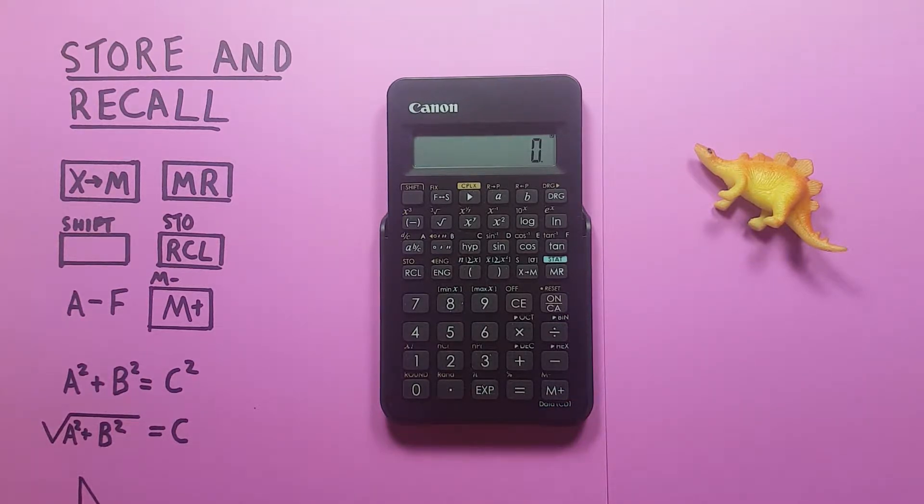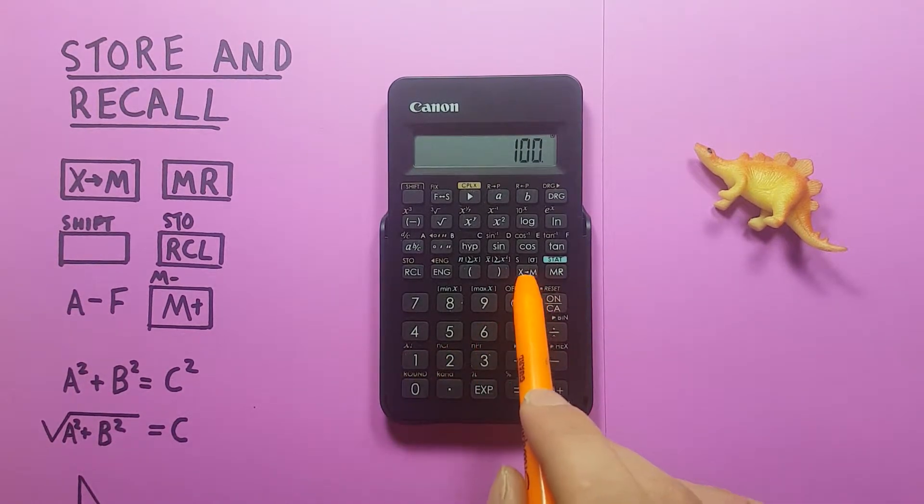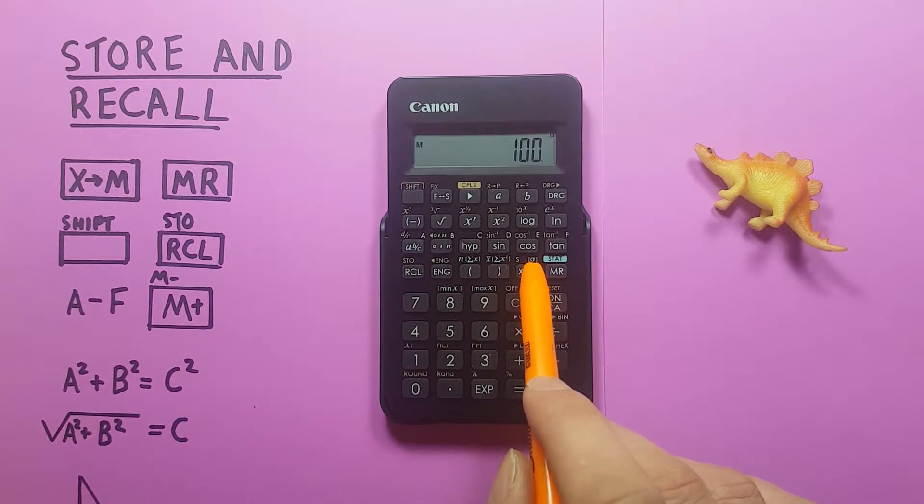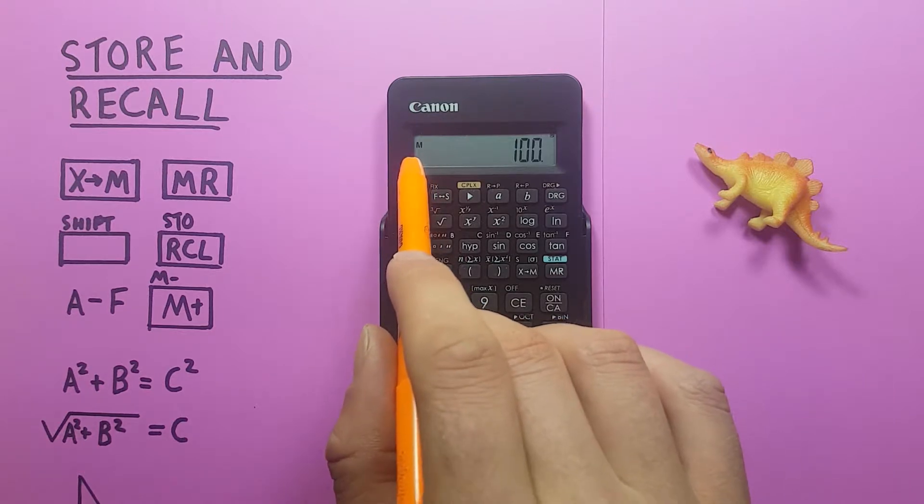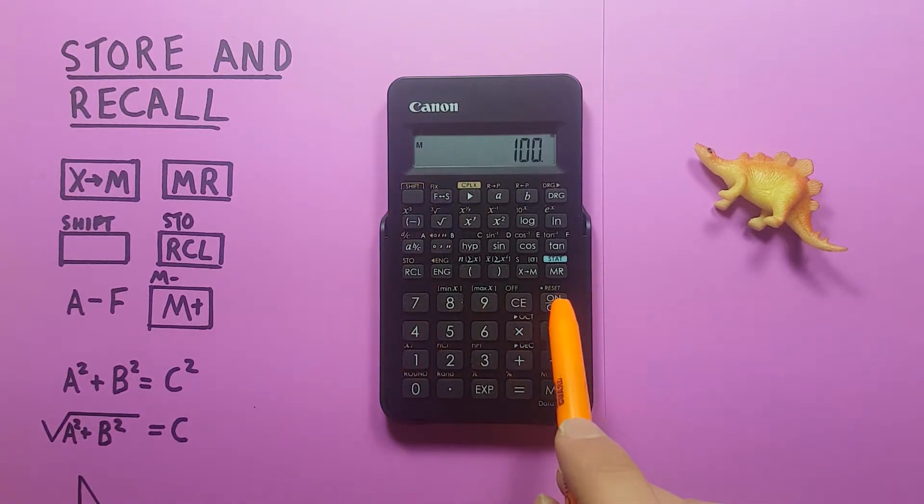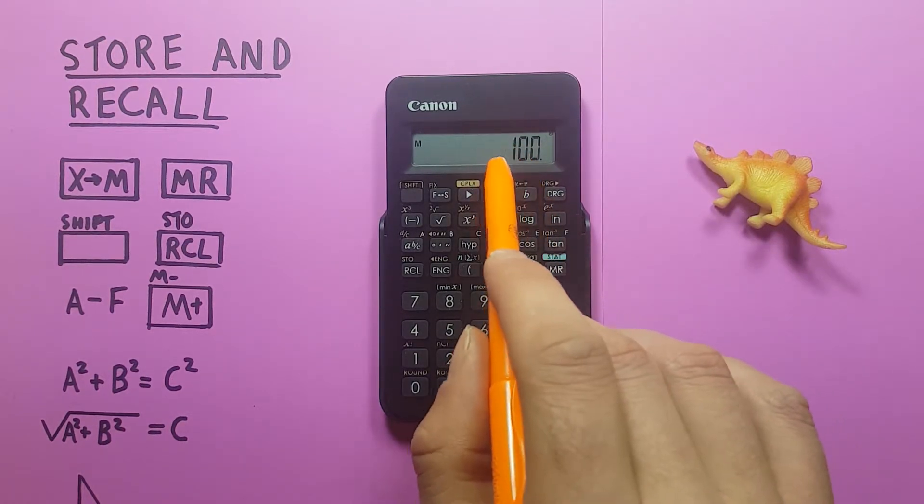So to start, this calculator has one independent memory slot which is represented by the MR here. If we wanted to put something into this memory we would place it on the screen and then press the X to M key. See the M appears in the left-hand side of the screen there, that tells us there is something in the independent memory. So if we clear the screen and then press MR, it'll recall our independent memory.